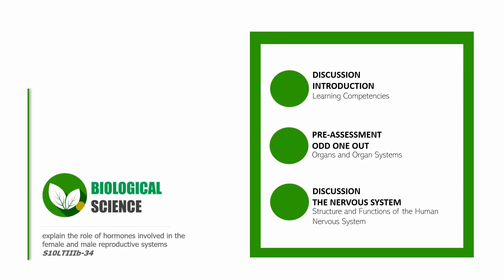Hi, this is SirCJ and welcome to Biology 10. Let us now start with the very first session. This session is divided into the following parts: first, a discussion of the introductions and the various learning competencies; second, a pre-assessment where you will be choosing the odd organ out of a group of organs; and last, a discussion about the nervous system — the structure and functions of the human nervous system.